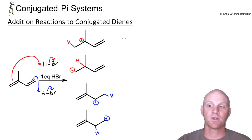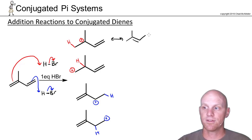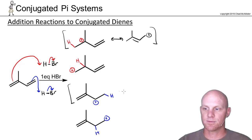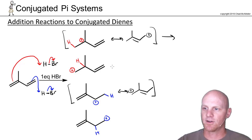It's even more complicated because two of these carbocations are allylic and will be stabilized by resonance. We can draw resonance structures for these allylic carbocations. Now we're going to predict some products based on these different carbocations.